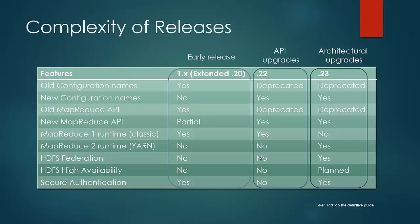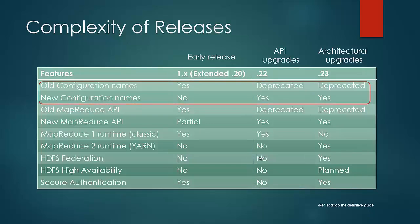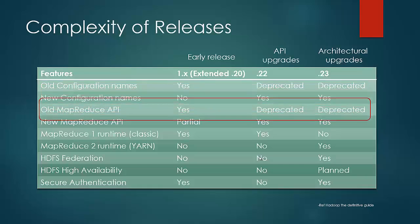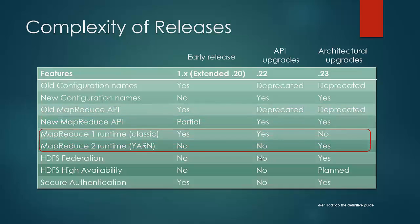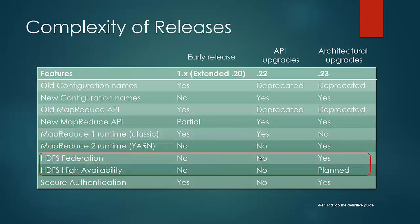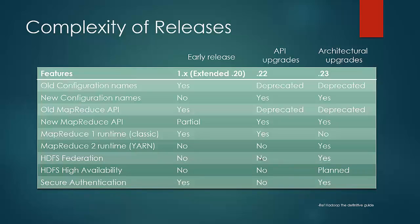In this slide, we will see the difference in features between the releases. Hadoop 1.x uses old configuration names, while 0.22 upgraded to new configuration names, and so did 0.23. The old configuration names are supported but deprecated in 0.22 and 0.23. The same is true for APIs: 1.x uses old APIs, while 0.22 and 0.23 use new APIs, though they support old APIs for backward compatibility. The architectural change to MapReduce Runtime YARN has been done in the 0.23 release, while 0.22 and 1.x work on classic MapReduce 1. HDFS Federation and HDFS High Availability were also introduced in 0.23. Hadoop 1.x improved secure Kerberos authentication, which was not in 0.22 but has been covered in 0.23.